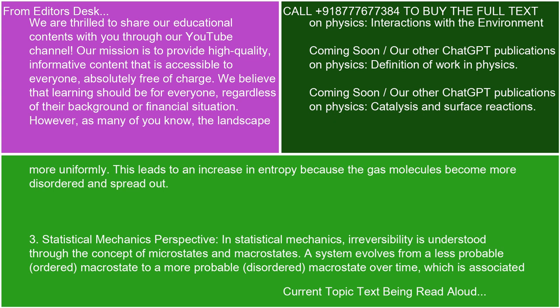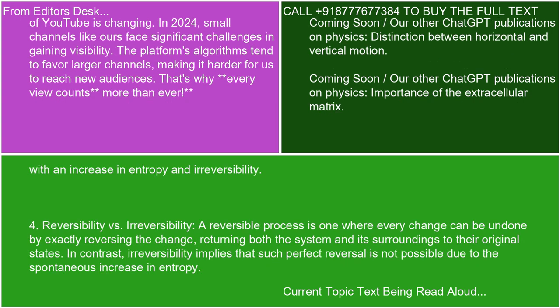3. Statistical mechanics perspective. In statistical mechanics, irreversibility is understood through the concept of microstates and macrostates. A system evolves from a less probable ordered macrostate to a more probable disordered macrostate over time, which is associated with an increase in entropy and irreversibility.